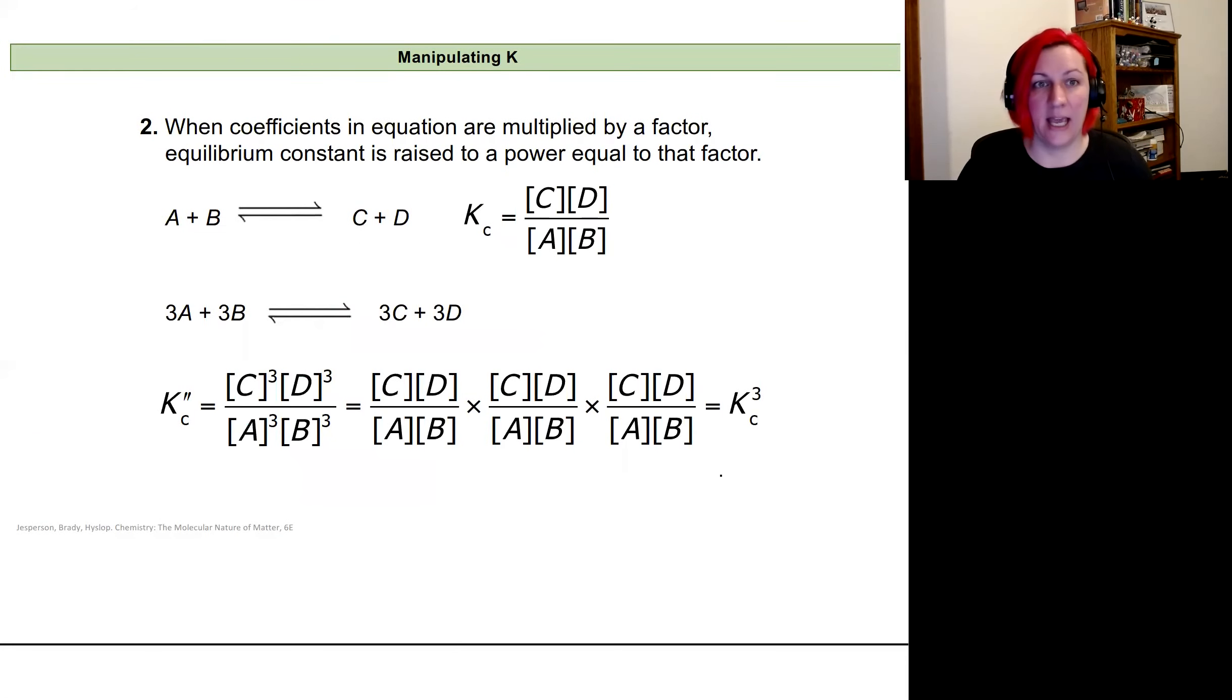Another way to manipulate K is when the coefficients of an equation are multiplied by a factor. When the coefficients are multiplied by a factor, we're going to raise our equilibrium constant to a power equal to that factor.